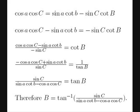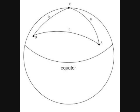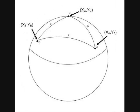In this example, if we let A be Mecca, B be one's current city, and C the North Pole, we can find the direction towards Mecca. Here we have created a spherical triangle ABC, where points are denoted by uppercase A, B, and C, and the opposite side lengths by lowercase a, b, and c respectively.